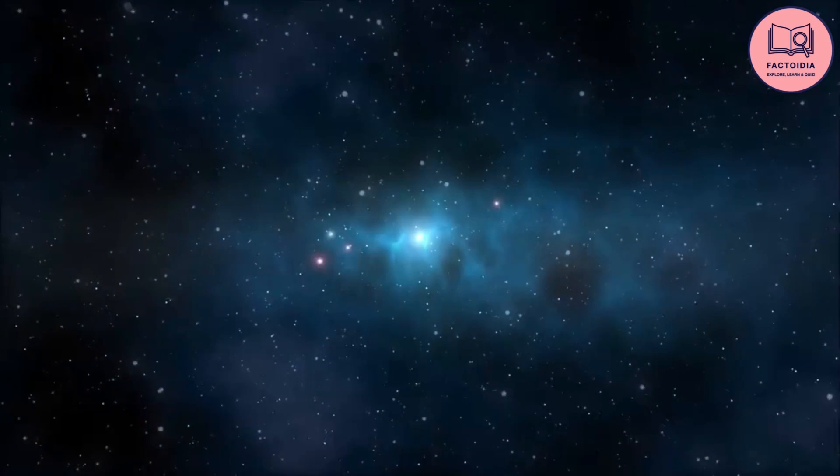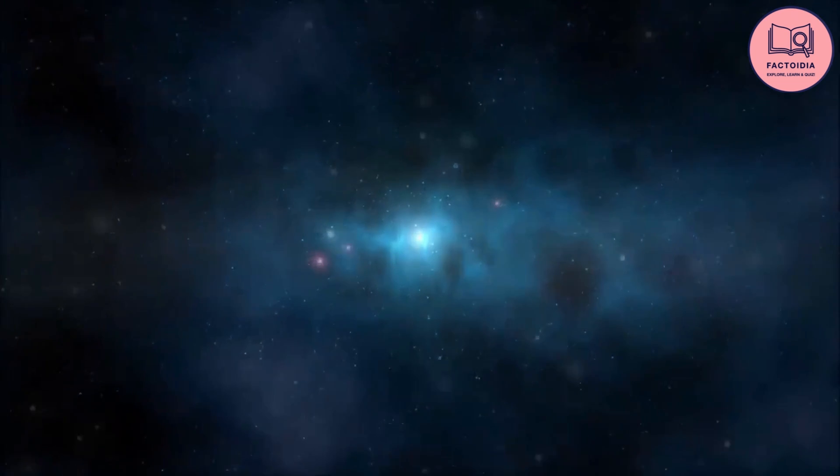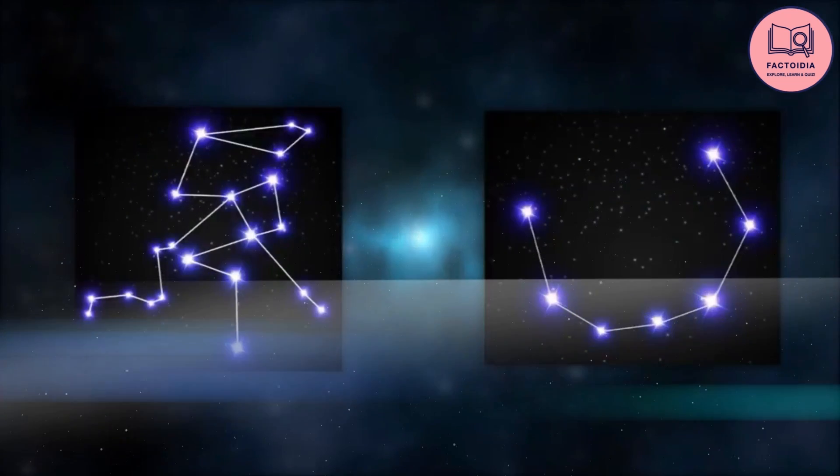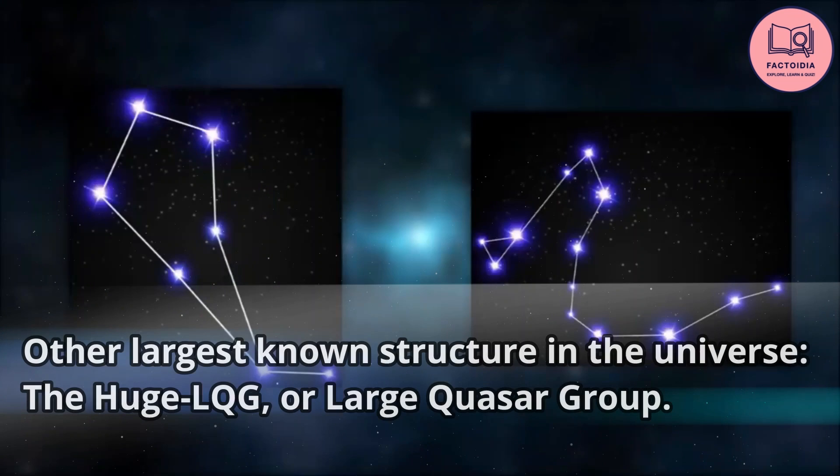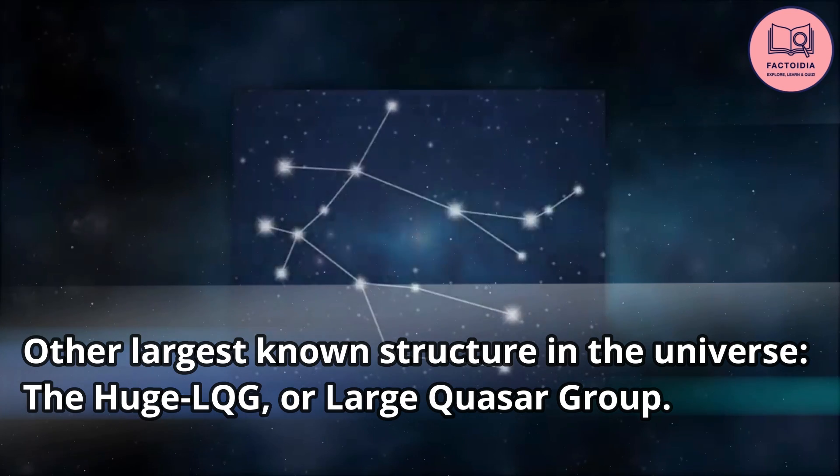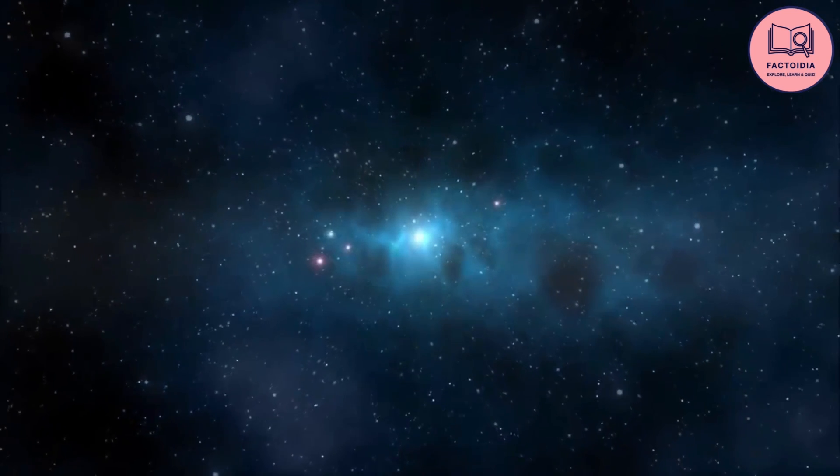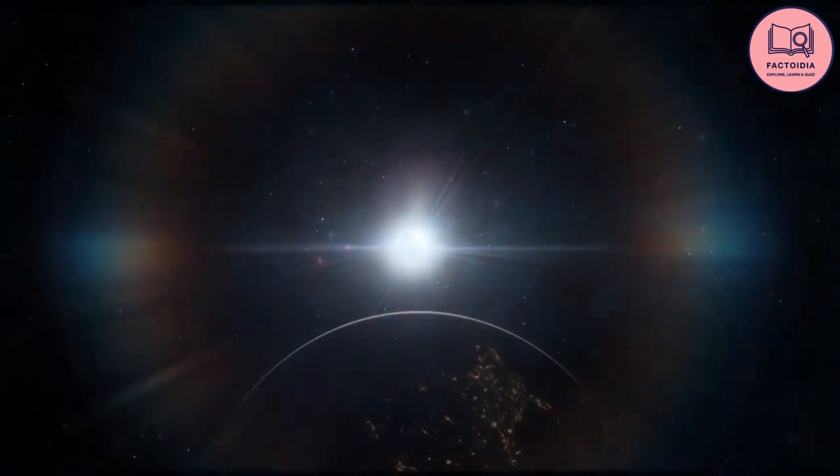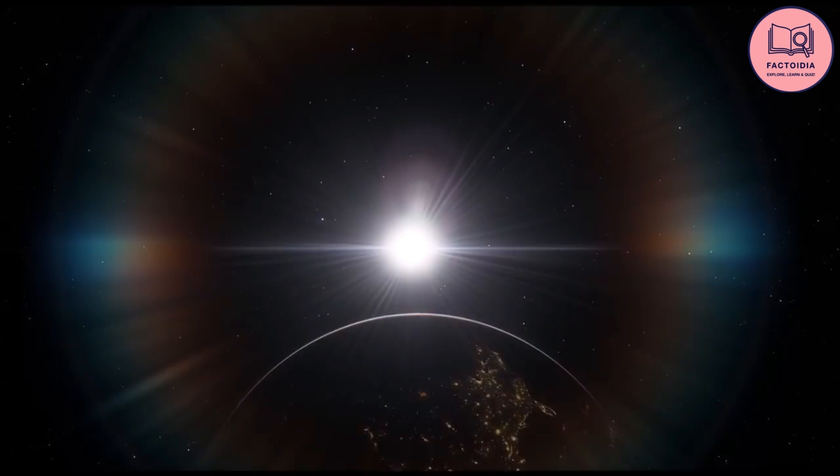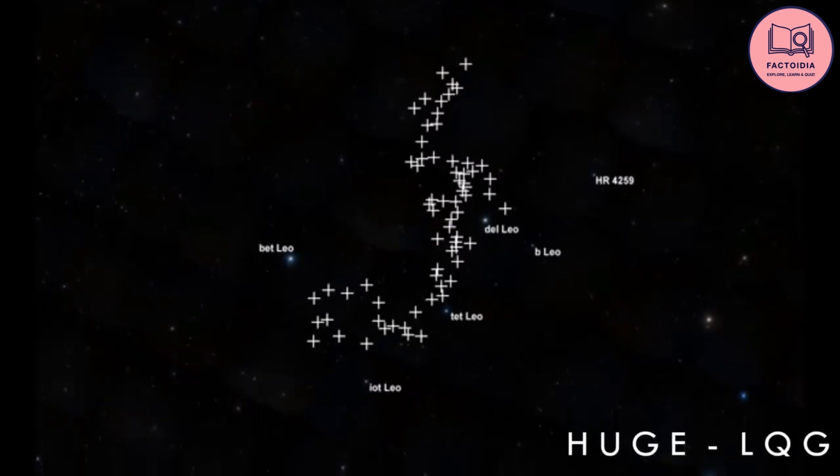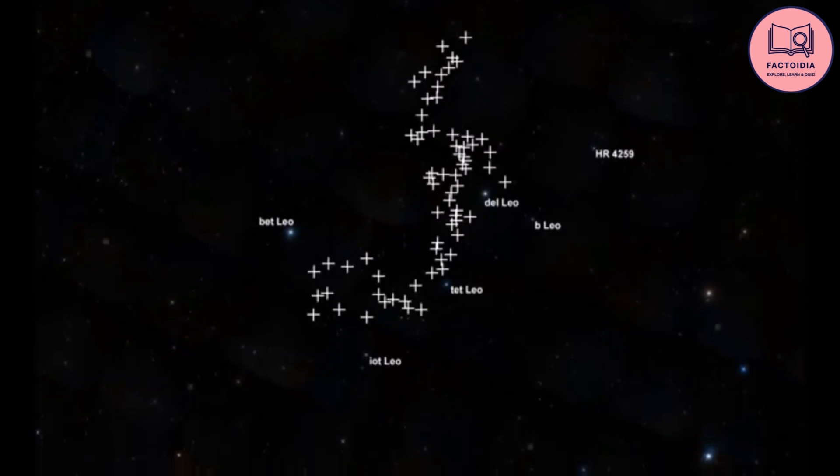But there's also another contender for the largest known structure in the universe, the huge LQG, or large quasar group. This is a group of over 70 quasars, spread out over a distance of around 4 billion light-years. It's still a matter of debate whether the huge LQG is truly a single structure or just a collection of smaller structures. Either way, the sheer size and complexity of these structures is a testament to the power and beauty of the universe.